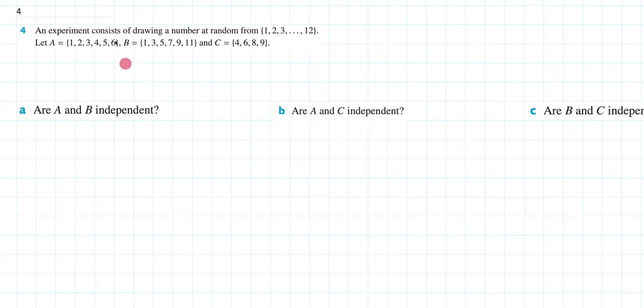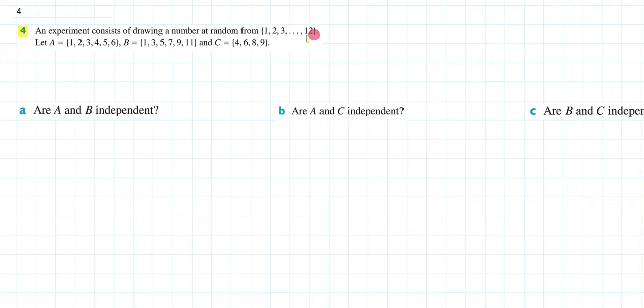We're in exercise 9G and we're now going to be answering question 4. An experiment consists of drawing a number at random from the set 1, 2, 3, all the way to 12.